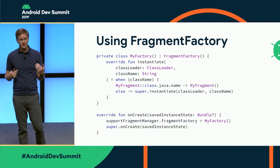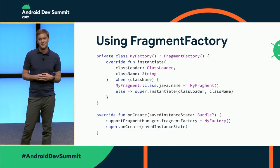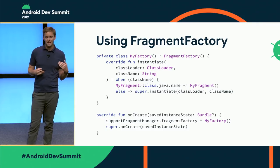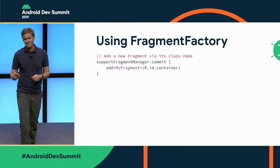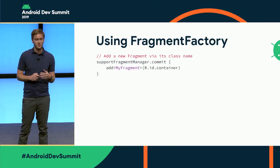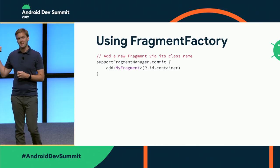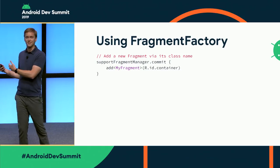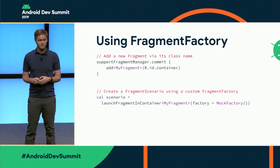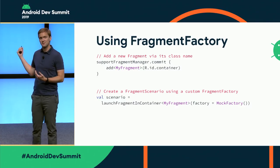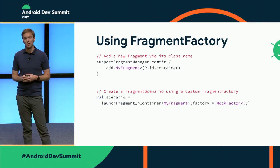In your Activity, you call fragmentManager.fragmentFactory and set it to your factory, preferably before super.onCreate, because that's when we re-instantiate fragments. When doing a commit and adding a fragment, instead of instantiating manually, you can just add it by class name — here using the Kotlin reified version — and it delegates to your factory. Similarly, when using FragmentScenario, you just pass the factory — it could be a mock factory for mock dependencies, or a real factory for integration testing.